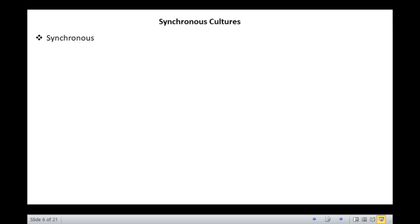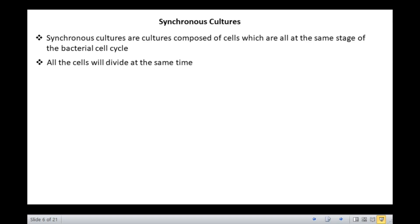Information about the growth behavior of individual bacterium can be obtained by the study of synchronous cultures. Synchronous cultures are cultures composed of cells which are all at the same stage of the bacterial cell cycle. Hence, all the cells will divide at the same time, grow for a generation time, and again divide at the same time. Measurements made on synchronized cultures are equivalent to measurements made on individual cells. The synchronous cultures therefore show a biphasic growth pattern.